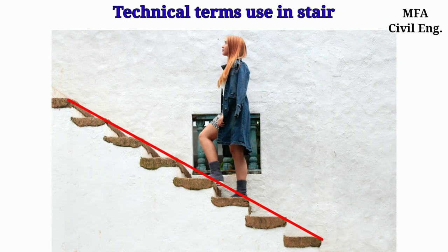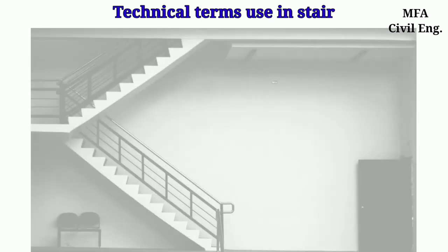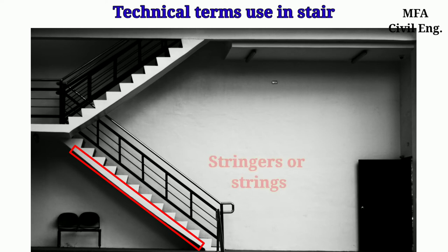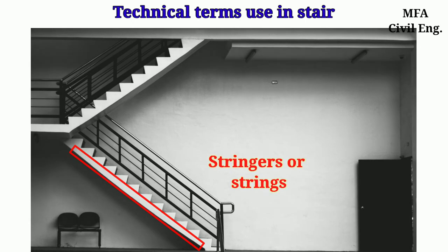The imaginary line joining the ends of the nosings of all steps is called the line of nosing. The inclined portion of a stair which supports the steps is called the stringers or strings.